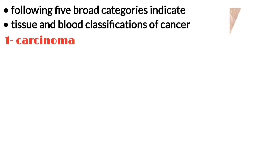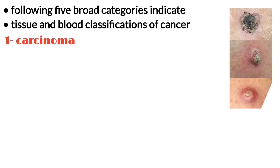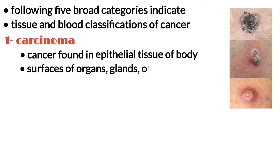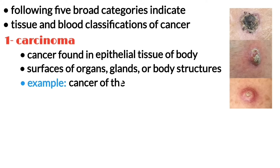Number one is carcinoma. A carcinoma is a cancer found in body tissue known as epithelial tissue, which covers the outer surface of organs, glands, or body structures. For example, a cancer of the lining of the stomach is called a carcinoma.